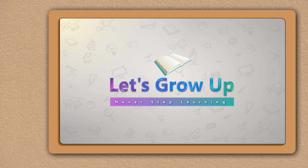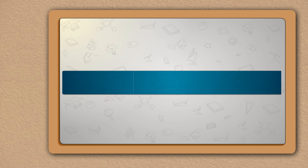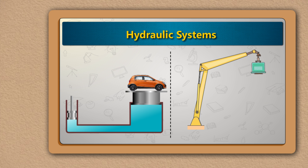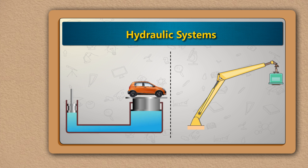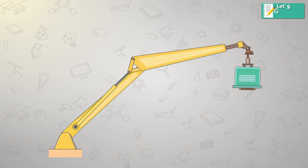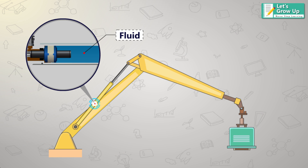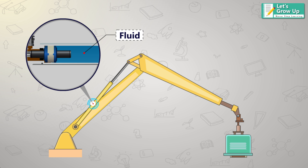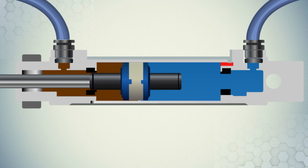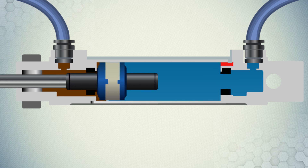Today we will learn about hydraulic systems, how they work, and the theory behind the technology. Hydraulic systems use an incompressible fluid such as oil or water to transmit forces from one location to another within the fluid. Hydraulics are used in many ways — here are some examples.